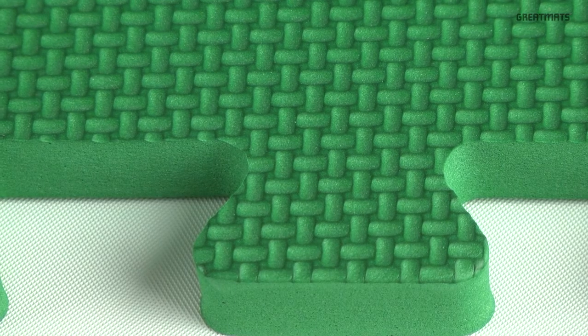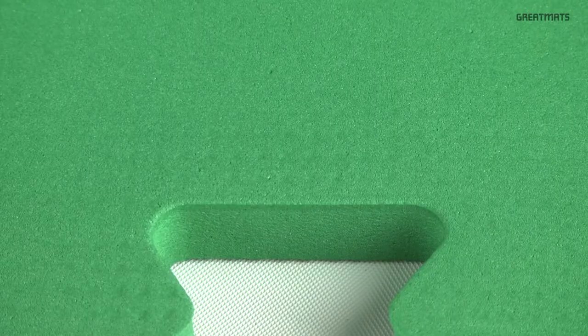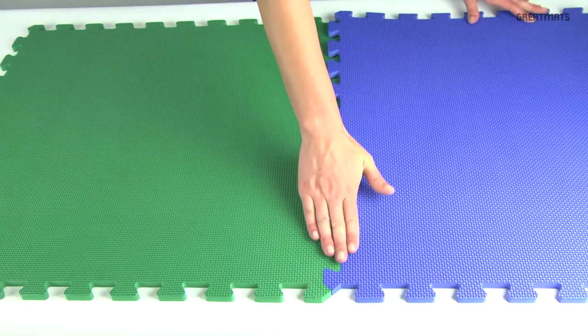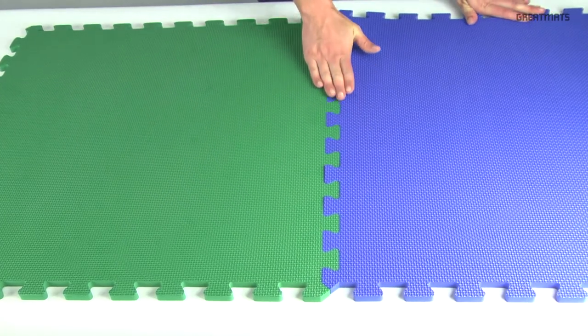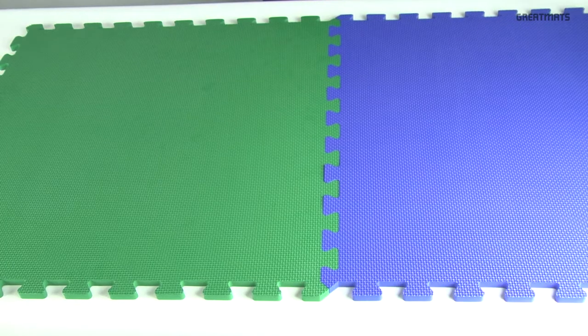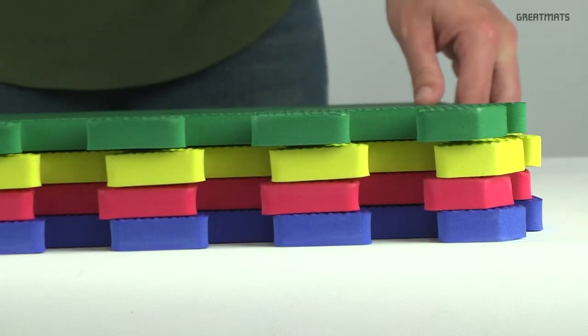The top side features a scuff resistant surface, while the bottom is smooth. Connect the mats together simply by pushing the jigsaw puzzle style edges together. Leave them in place or stack them for easy storage.